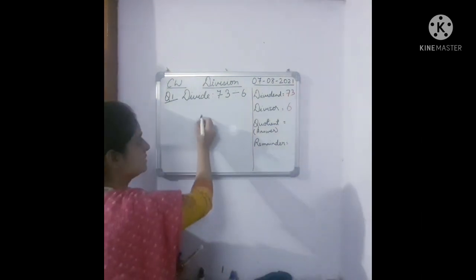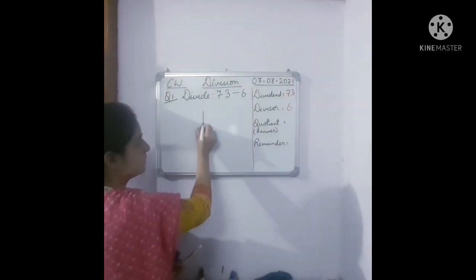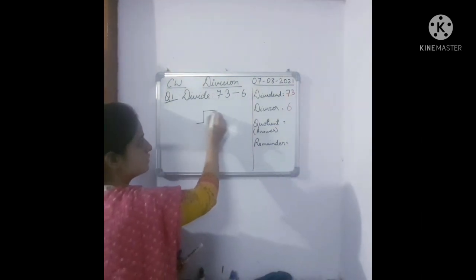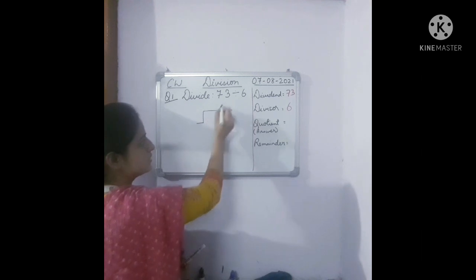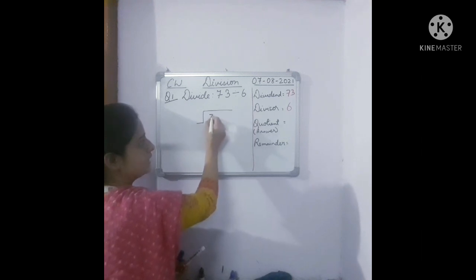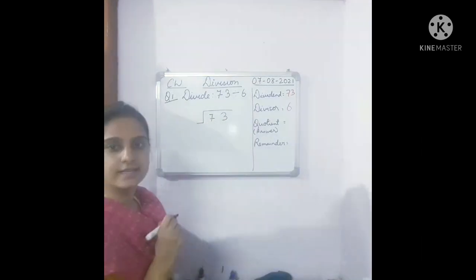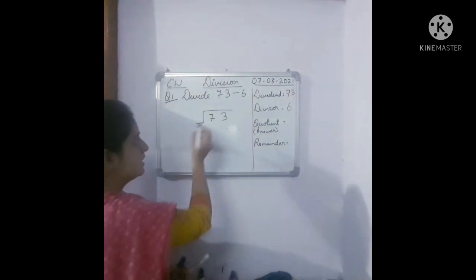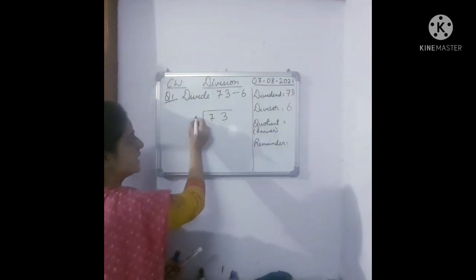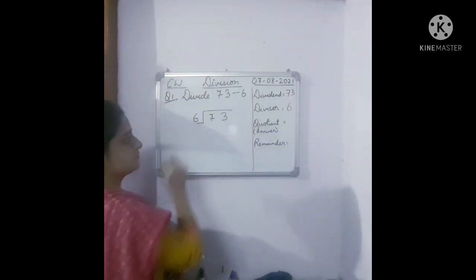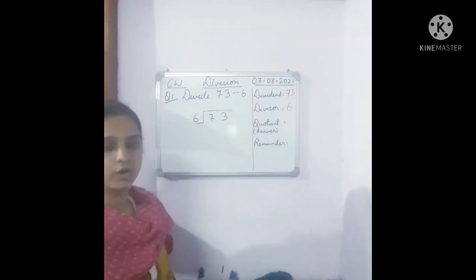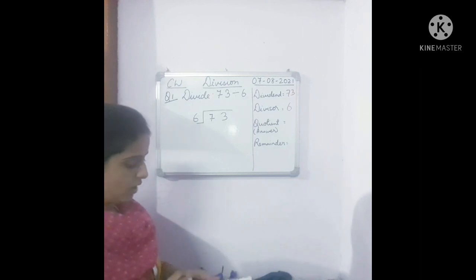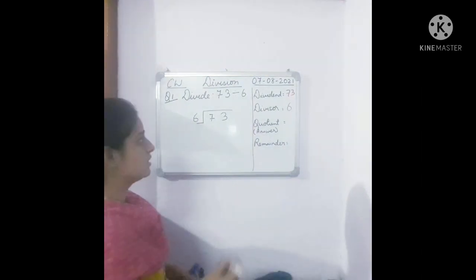Let's start. Inside we write the dividend, and outside we write the divisor.